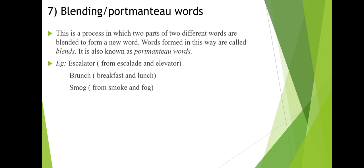Blending is a process in which two parts of two different words are blended to form a new word. Words formed in this way are called blends, also known as portmanteau words. For example, 'breakfast' plus 'lunch' gives 'brunch'. Another example is 'smoke' blended with another word. If you have two different words and blend two parts together, that process is called blending.